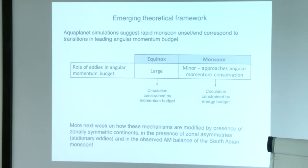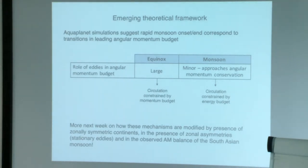As a caveat, this is based on an AquaPlanet and totally neglects zonal asymmetry. There will be more discussion about how these mechanisms should be modified to include zonally asymmetric continents, and how these mechanisms are also modified by the presence of stationary eddies when you do have zonal asymmetries. There is also a poster discussing what the observed angular momentum balance in the South Asian monsoon looks like, and whether the transition from a more linear to a nonlinear angular momentum budget is seen in observations as well.